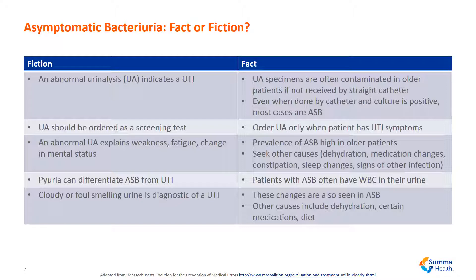The next myth is that pyuria, or white blood cells in the urine, can differentiate asymptomatic bacteria from a urinary tract infection. The truth is that patients with asymptomatic bacteria often do have white blood cells in their urine. The next myth is that cloudy or foul-smelling urine is diagnostic of a UTI. The truth is that these changes are also seen in asymptomatic bacteria, and other causes include dehydration, certain medications, and dietary changes as well.